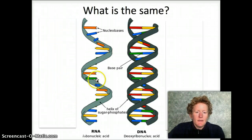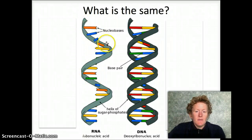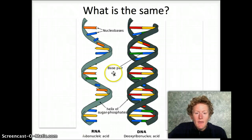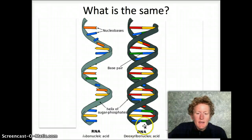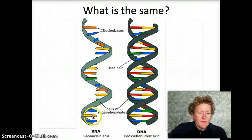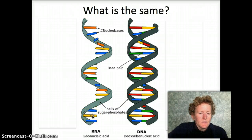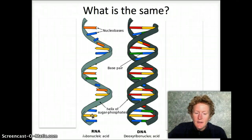Let's look at some similarities. They both have a sugar phosphate backbone, although it's a little bit different with different sugars. They both have base pairs, but in DNA there are base pairs, whereas in RNA the base doesn't have a pair. So there are some similarities and differences between RNA, ribonucleic acid, and DNA, deoxyribonucleic acid.